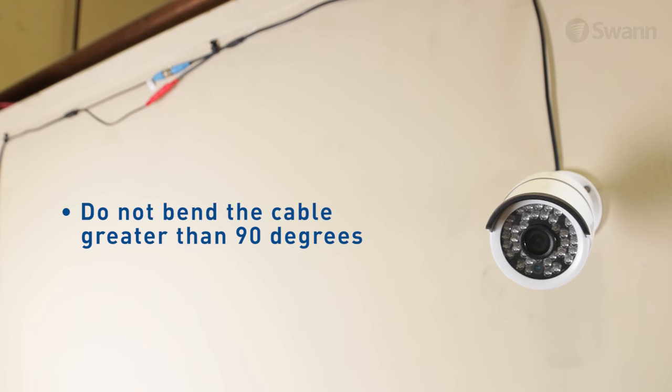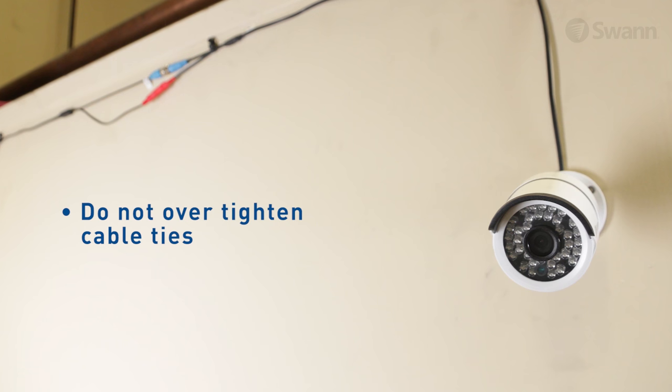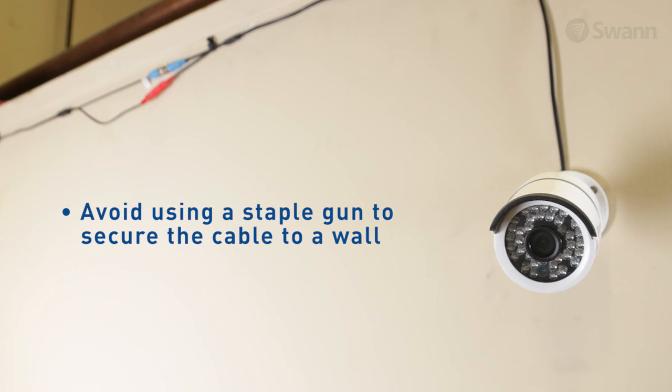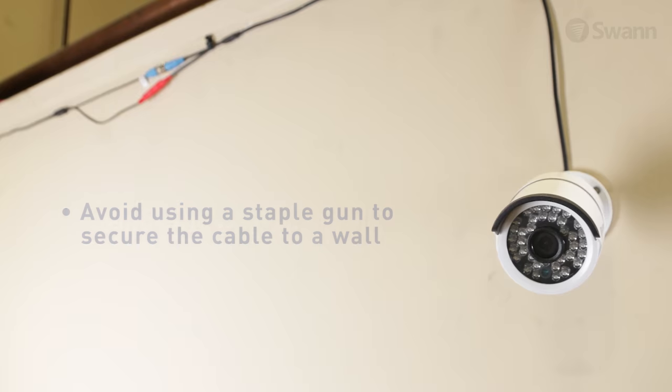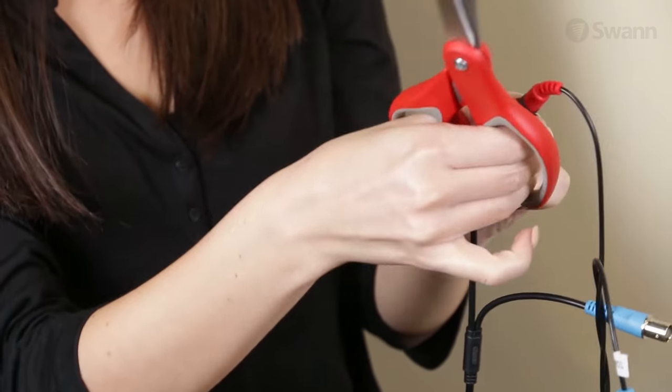Do not bend the cable greater than 90 degrees. Do not over-tighten cable ties. Avoid using a staple gun to secure the cable to a wall. If the cable junctions will be outdoors, wrap the connections with electrical tape.